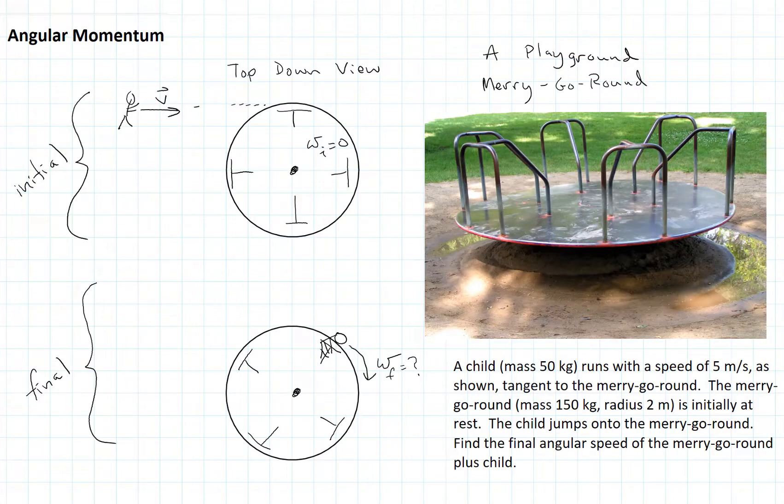In the previous lesson, we saw this example with the child running and jumping onto the merry-go-round at the park. Now let's solve this problem using conservation of angular momentum.